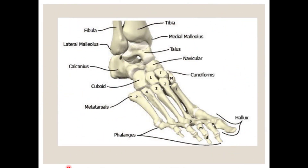Before discussing the muscles of the anterior compartment, I will tell you the bones of the foot. The tibia is the medial bone of the leg and the fibula is the lateral bone. The tibia articulates with the talus bone, and the fibula also articulates with the talus. Tibia, fibula, and talus articulate together to form the ankle joint.